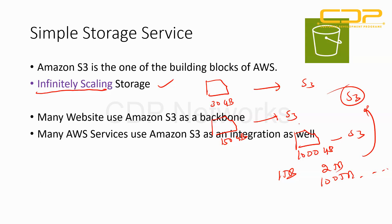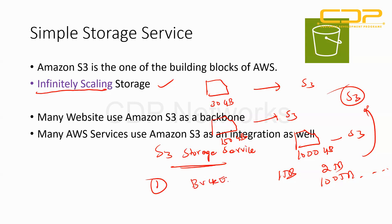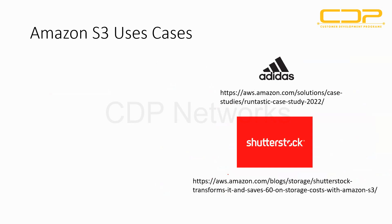Now, in S3, where do you store the files — called objects? The container used to store objects in S3 is called a bucket. Think of it like a folder on your laptop: you create a folder and put files inside. In S3, the bucket is that container — the directory used to store your objects.